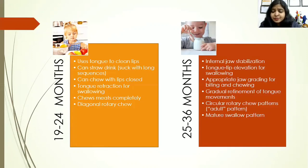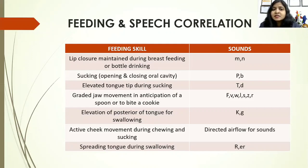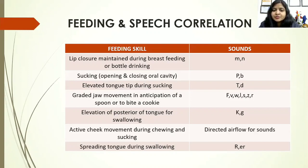Why are these milestones important for us, and why are feeding and speech so correlated? Because with oral musculature development, we see the development of sounds as well. When the child starts drinking milk, lip closure is maintained for M and B sounds. For sucking — PB sounds; elevated tongue tip — TD sounds; graded jaw movements — FVW, LSZSR; elevation of posterior tongue for swallowing — KNG sounds; and spreading of tongue during swallowing — R sounds. So as we proceed through the hierarchy of oral motor milestones, these sounds develop gradually as the muscles are coordinating.